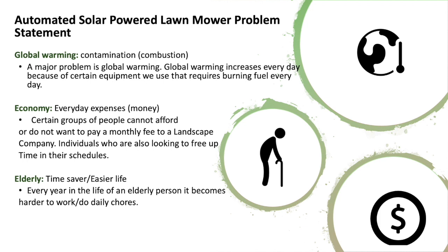Problem statement: With our automated lawn mower we are addressing the following problems. Global warming and contamination is a big issue nowadays, increasing every day because of equipment that requires gasoline to operate. Another issue is everyday expenses — some people cannot afford to pay a monthly fee, or simply don't want to, as it puts more stress on their economy. For those who decide to do it themselves, the task becomes a time consumer every week.